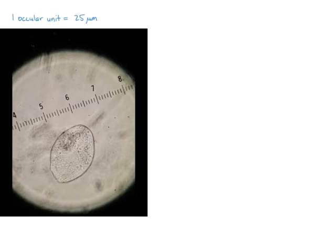Ideally you want to align the axis of the organism with the ruler, but since this is an image we're just going to approximate. Let's say this distance right here is equal to 2.1 ocular units.